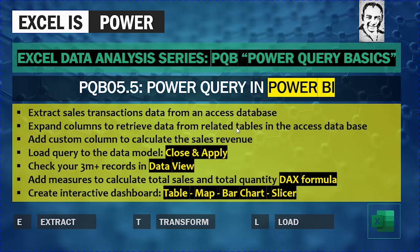Welcome to a new video from the Excel Data Analysis Series — PQB or Power Query Basics. This is video PQB 5.5. We are going to use the same example from the previous video PQB 5, but this time using Power Query in Power BI instead of Power Query in Excel. We'll extract sales transactions from an Access database, expand columns, retrieve more data, and use Add Custom Column to calculate sales revenue.